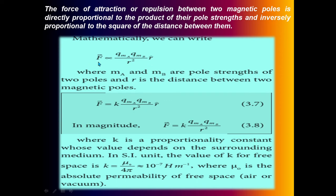Force F(r) is directly proportional to pole strength q_mA into q_mB — that is the product of the pole strengths q_mA into q_mB — divided by r squared, into r-hat. Here, q_mA and q_mB are the pole strengths of the two poles and r is the distance between the two magnetic poles. When we remove the proportionality, we multiply by the proportionality constant: F(r) = k × (q_mA × q_mB) / r² × r-hat.